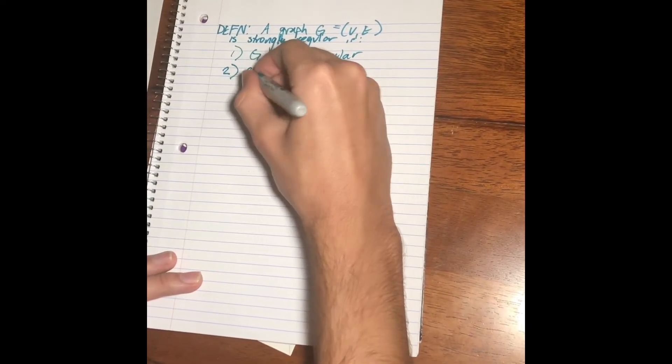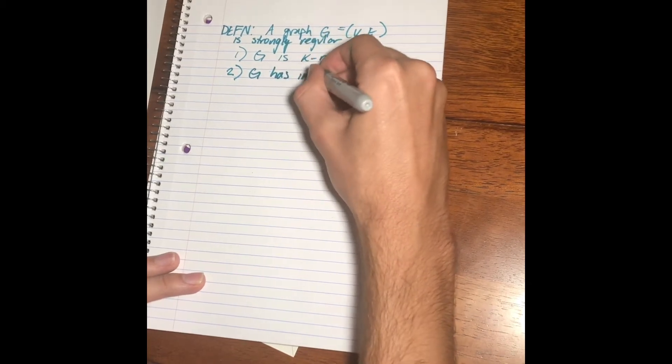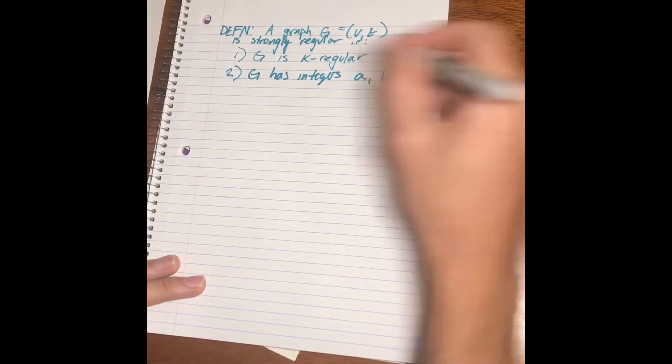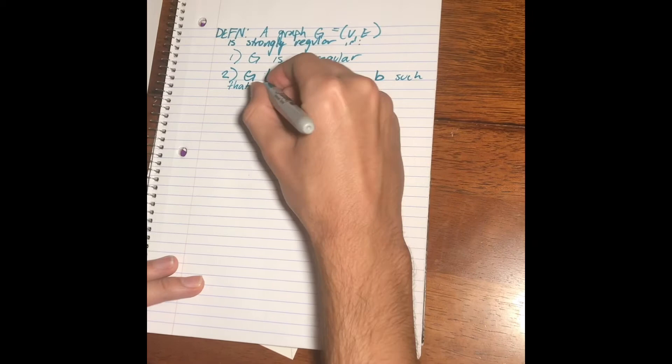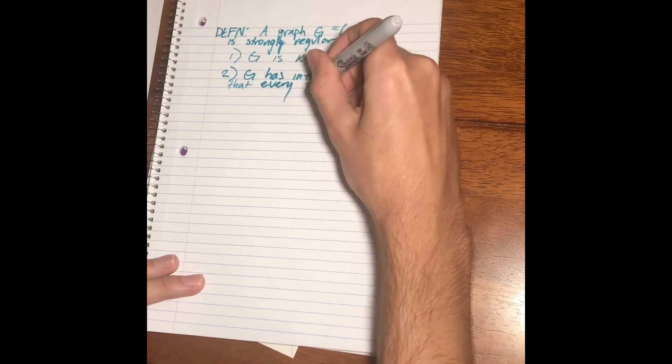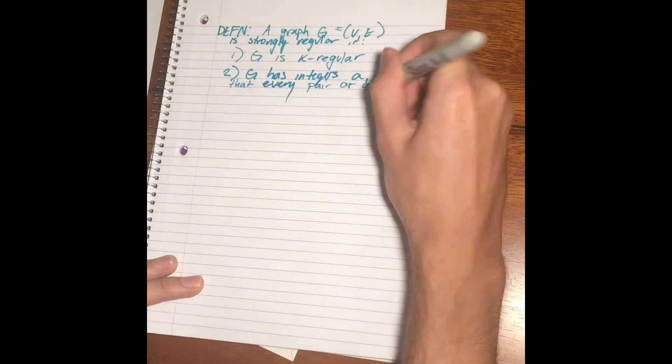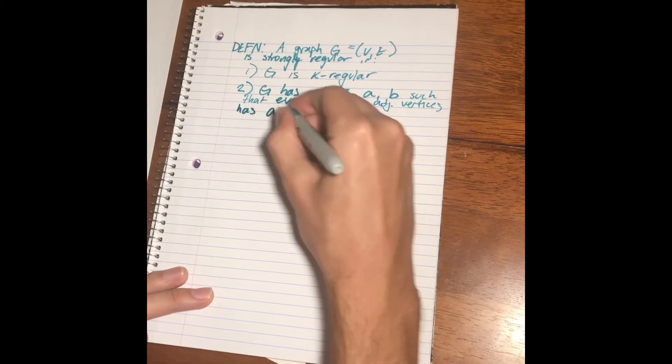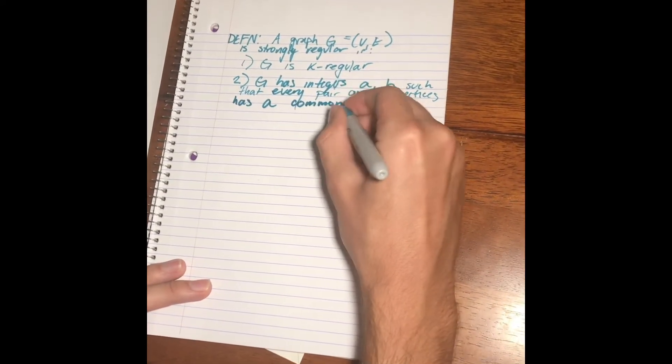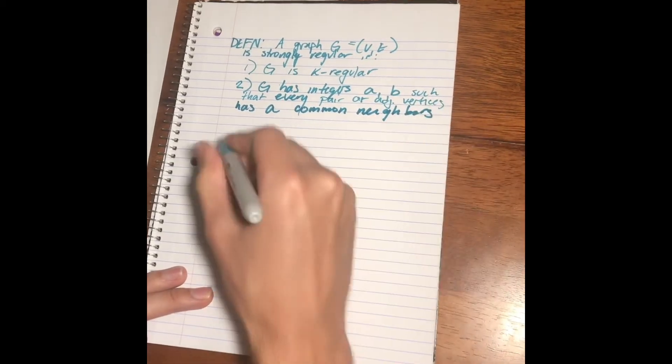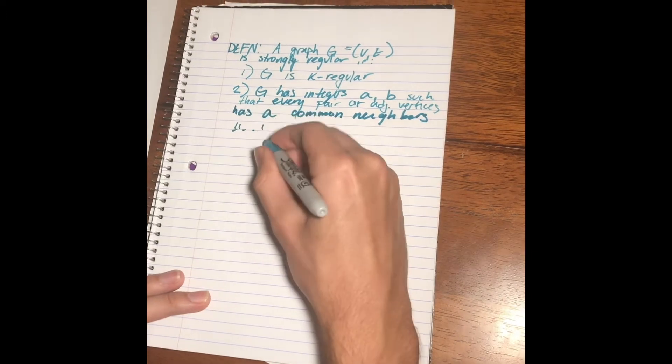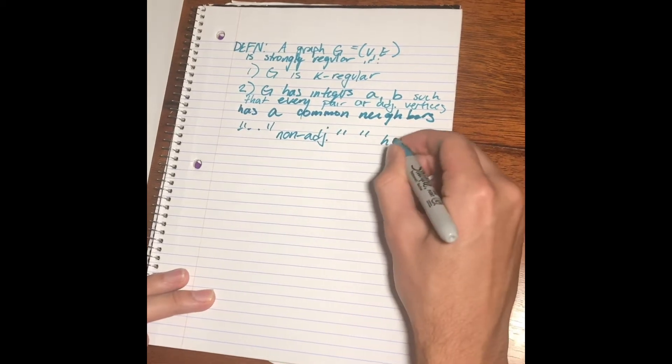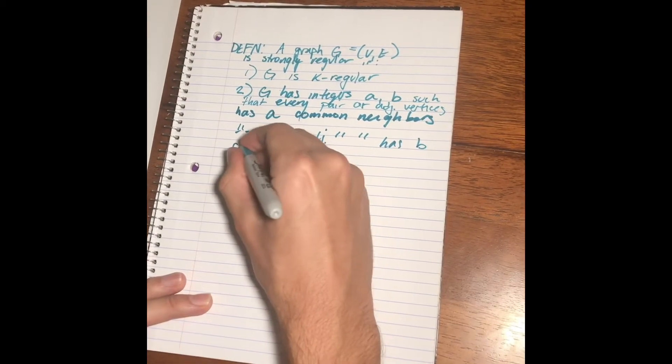Two, G has integers A and B such that every pair of adjacent vertices has A common neighbors and every pair of non-adjacent vertices has B common neighbors.